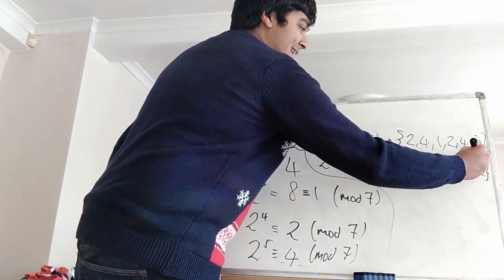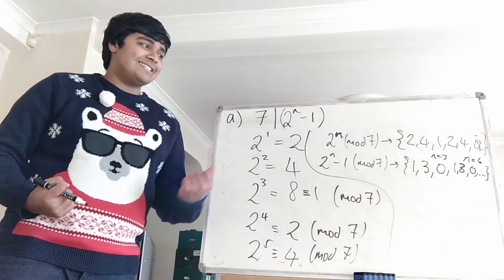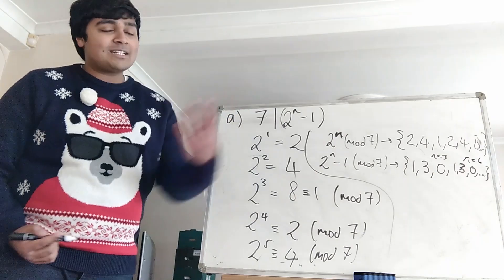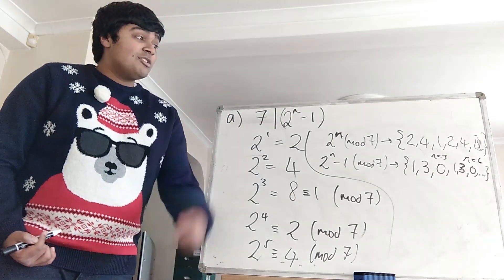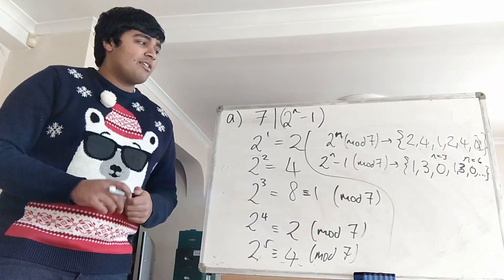And then we get this one here which is n equals 6 which is 2 to the 6 minus 1 which is 64 minus 1 which is 63 which is obviously a multiple of 7. The next one will be n equals 9 and so on. So the solution to part A is when n is a multiple of 3.